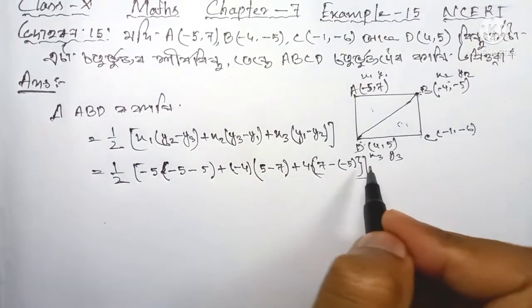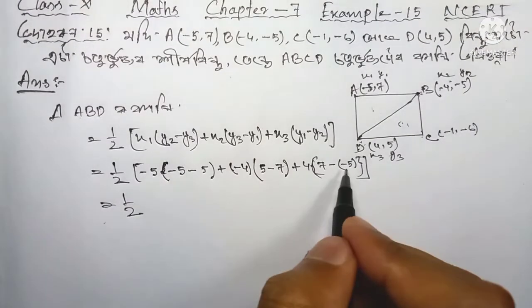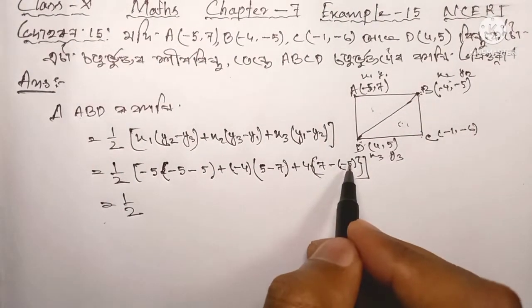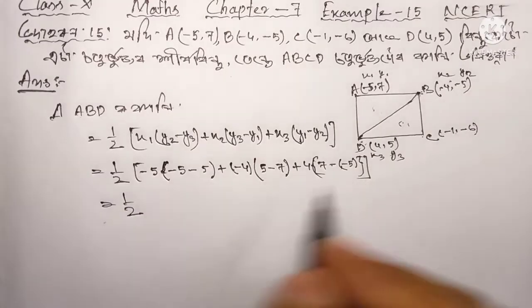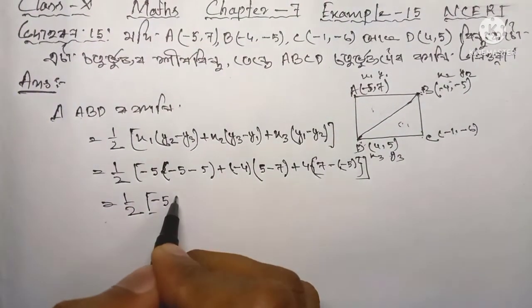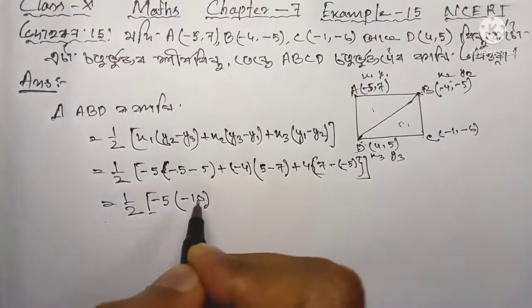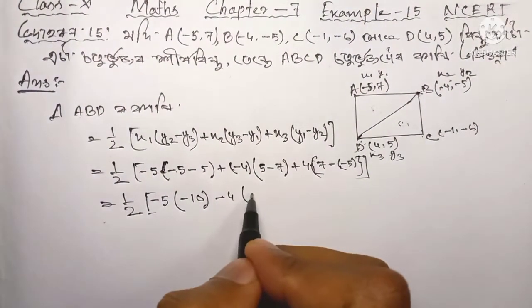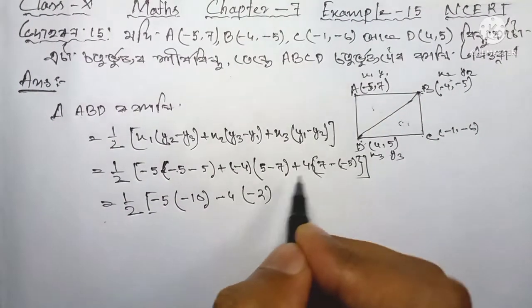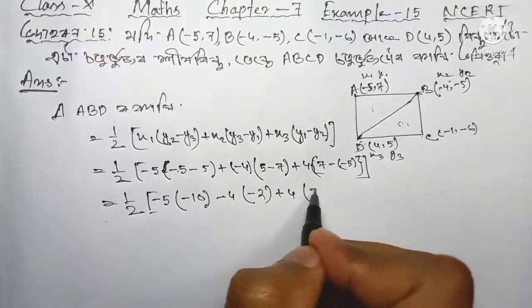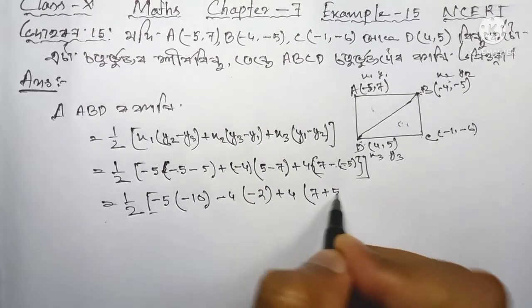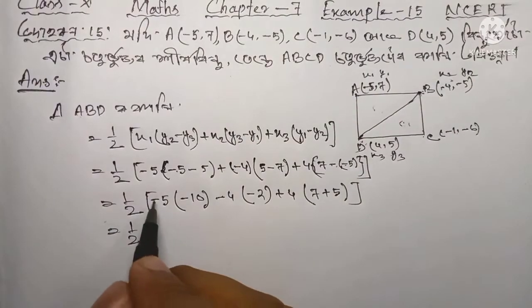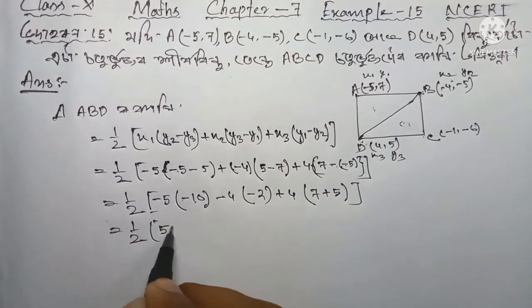Now we solve step by step. We get values and then simplify: plus minus minus four, and then break it out, so minus 7 plus 5. Then the answer: minus 22 plus 4, and then combining the signs, we pass through and solve again, plus minus minus plus plus, and then multiply by 2.5.